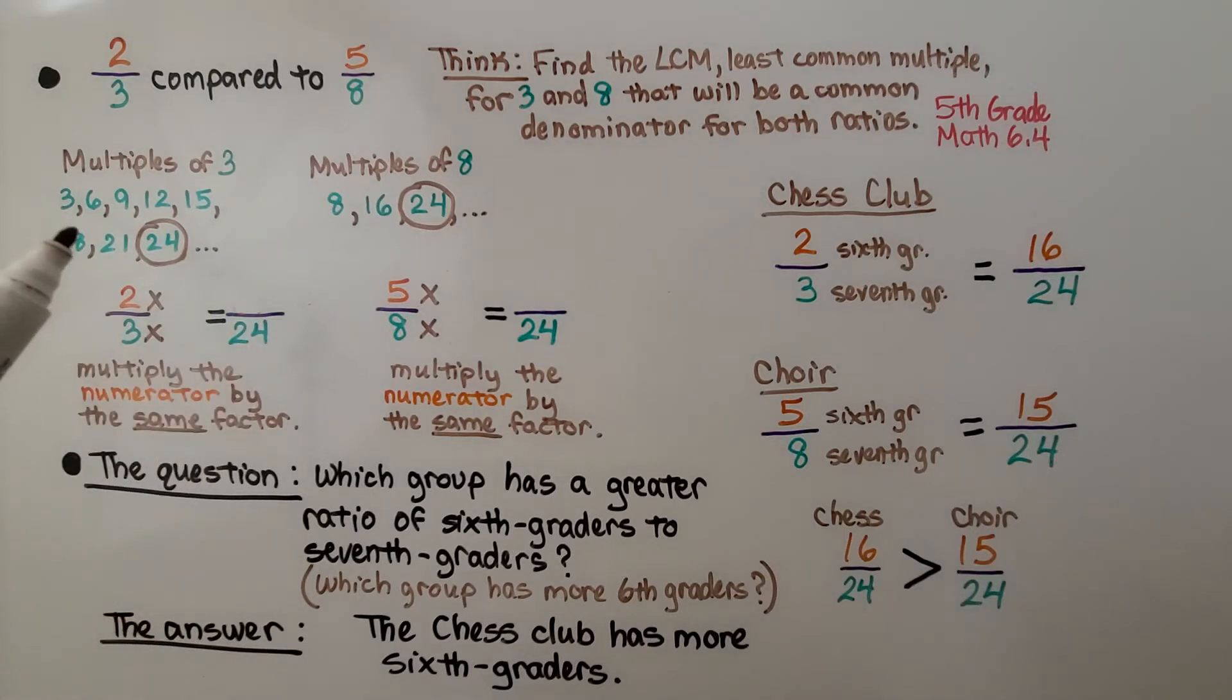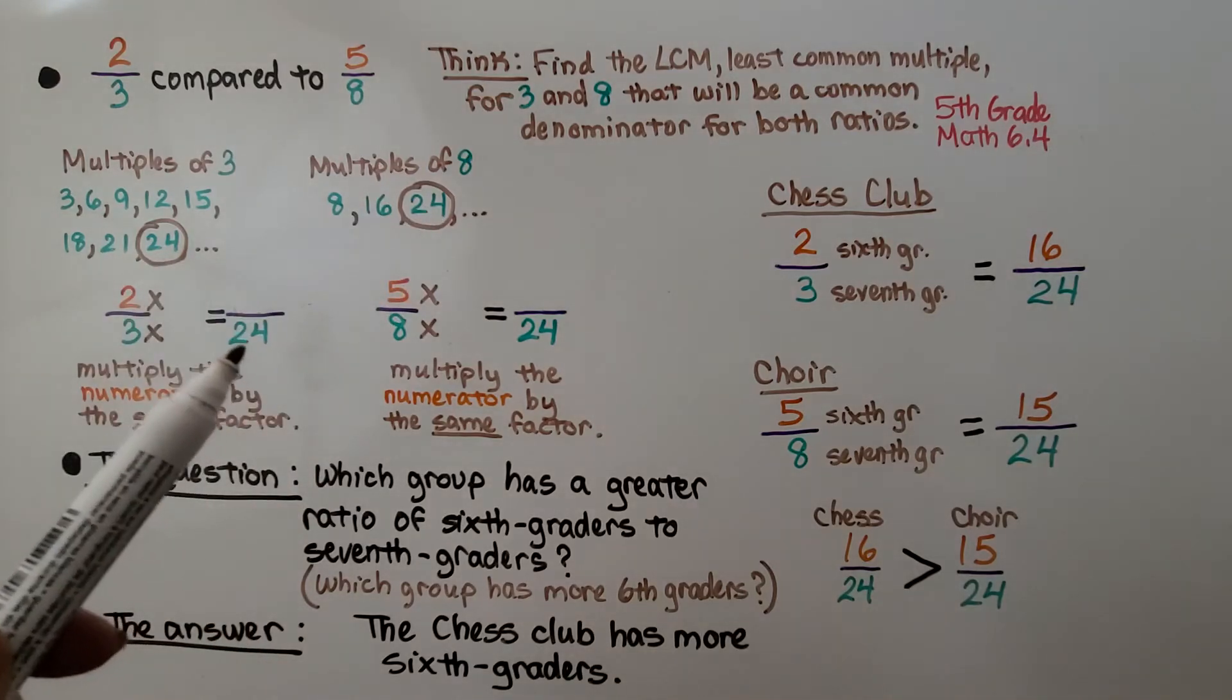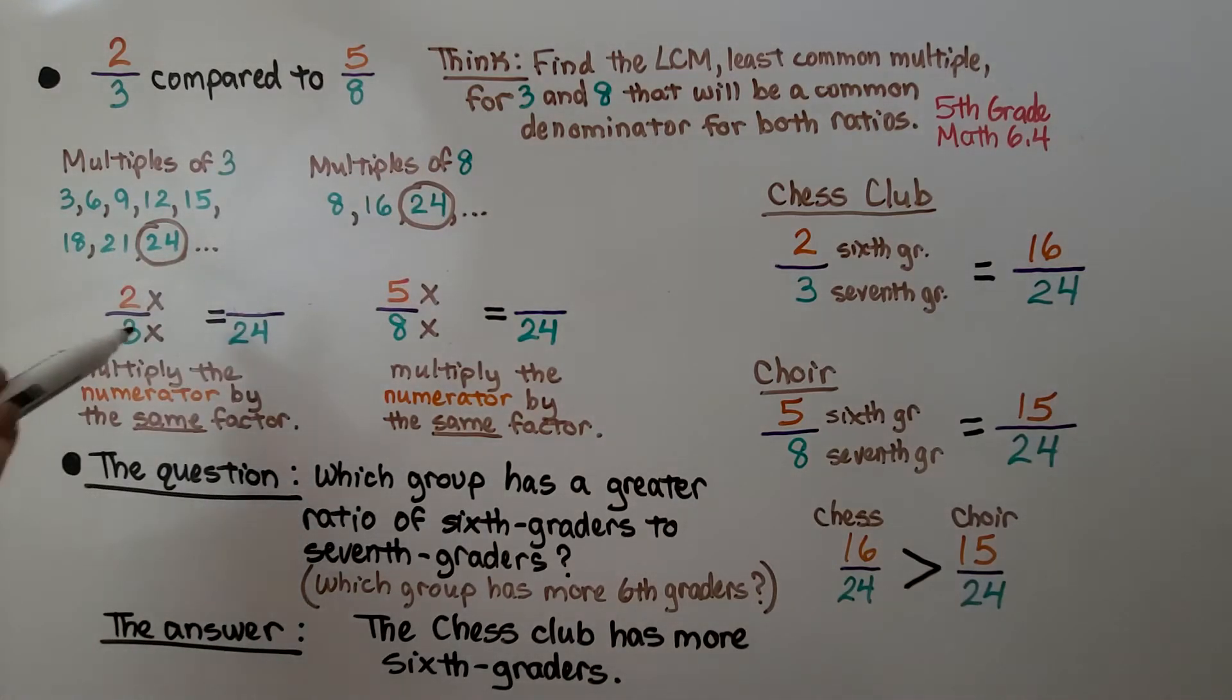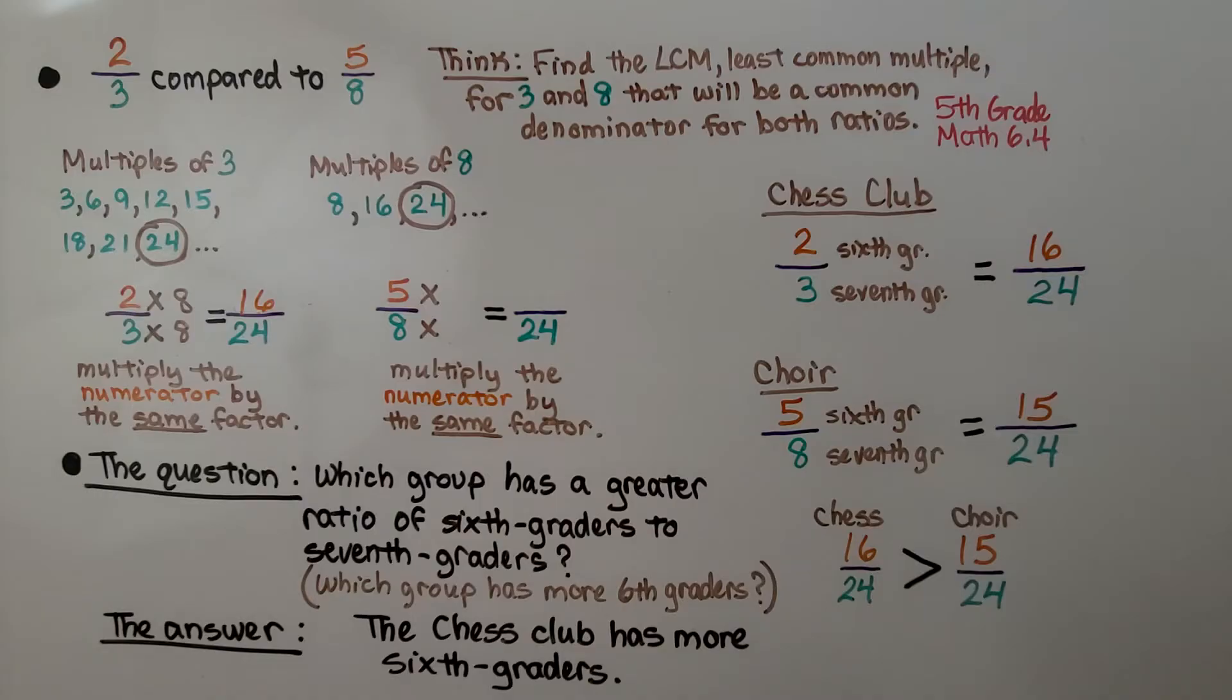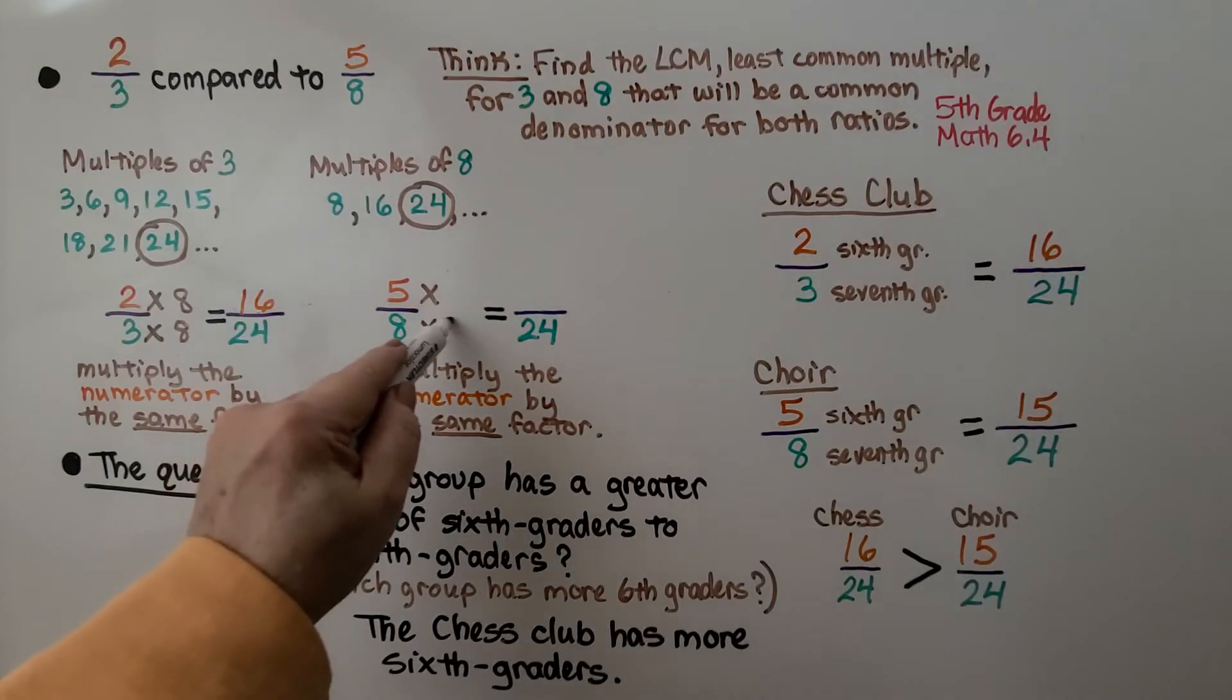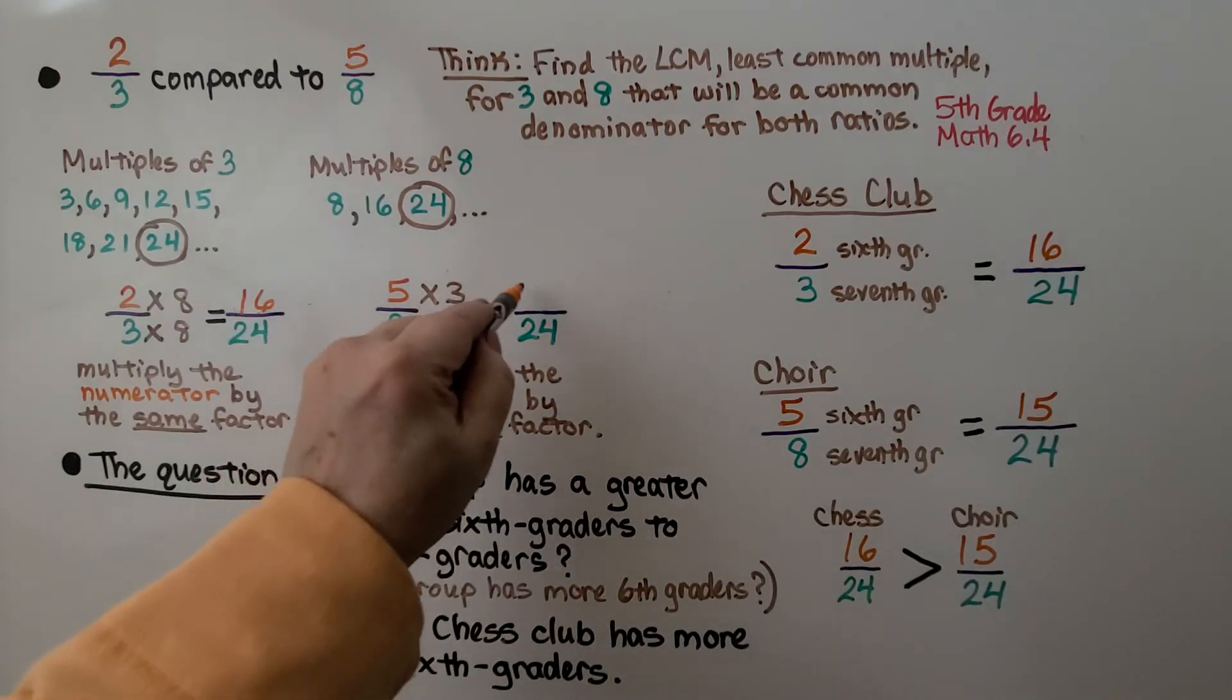We write out the multiples of 3 and the multiples of 8, and the least common multiple is 24, so that's what we're going to use. And 3 times 8 is 24, so we need to multiply the 2 times 8. That means our new first term is a 16. And we have 8 times 3 is 24, so 5 needs to be multiplied times 3. That means our new first term is 15.